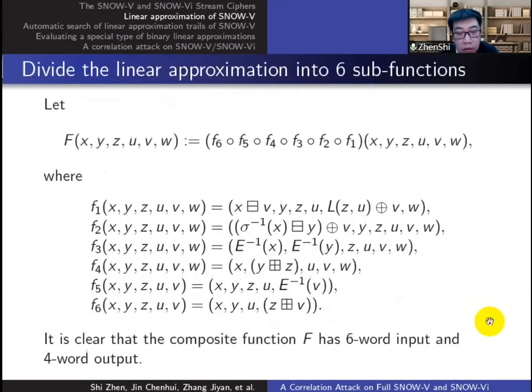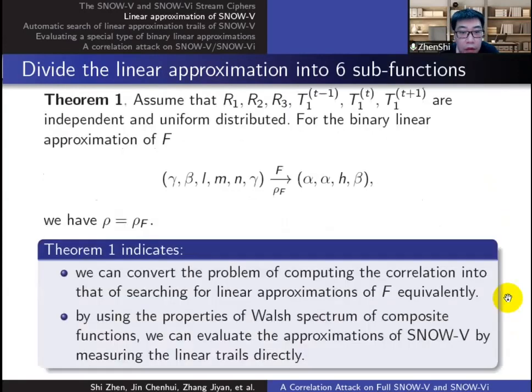Then we construct the six sub-functions and their composite function f. Thus we have Theorem 1: the correlation of this linear approximation of the function f is equal to that of the distinguisher. By this way, we convert the problem of finding distinguisher into searching for linear approximations of function f equivalently, and we can evaluate the correlation of linear approximations by measuring the linear trails directly.